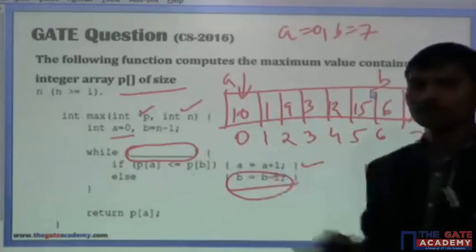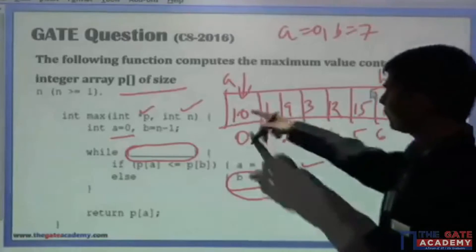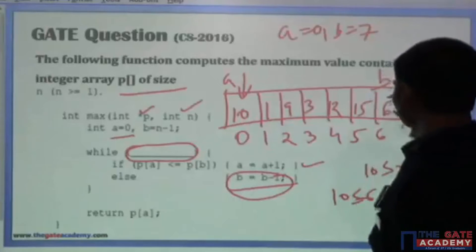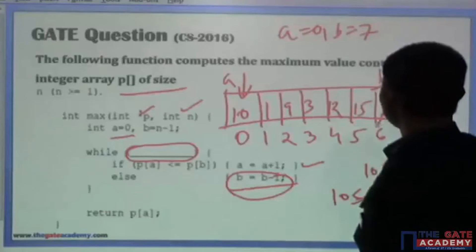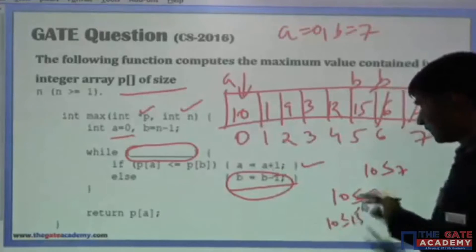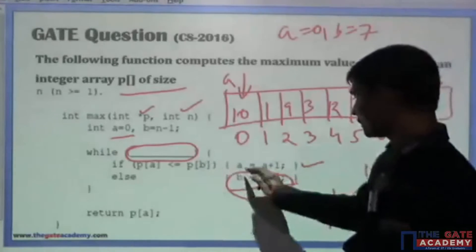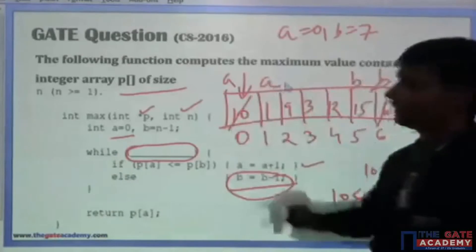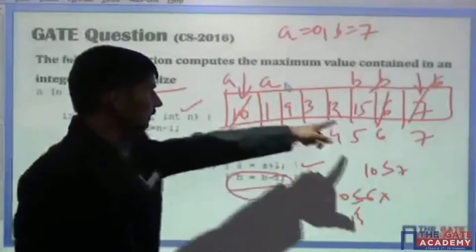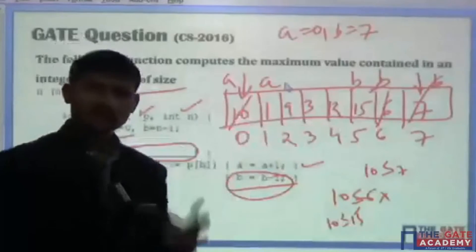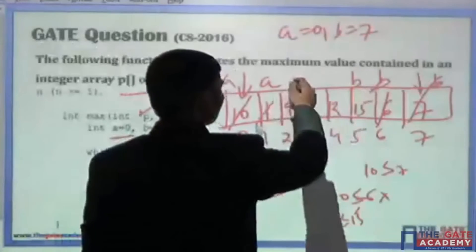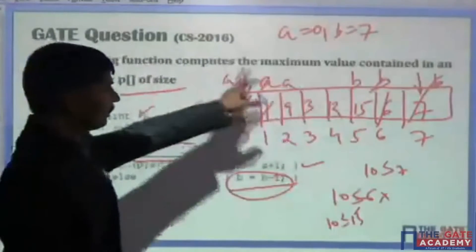The next time you check p[a] less than or equal to p[b]: 10 less than or equal to 6 is again false, so again b is equal to b minus 1. Then 10 less than or equal to 15 — yes, condition is true. So a is equal to a plus 1; you increase a. Then 1 less than or equal to 15 is true, so this element cannot be the maximum element either — a larger element is available. You increase a again.